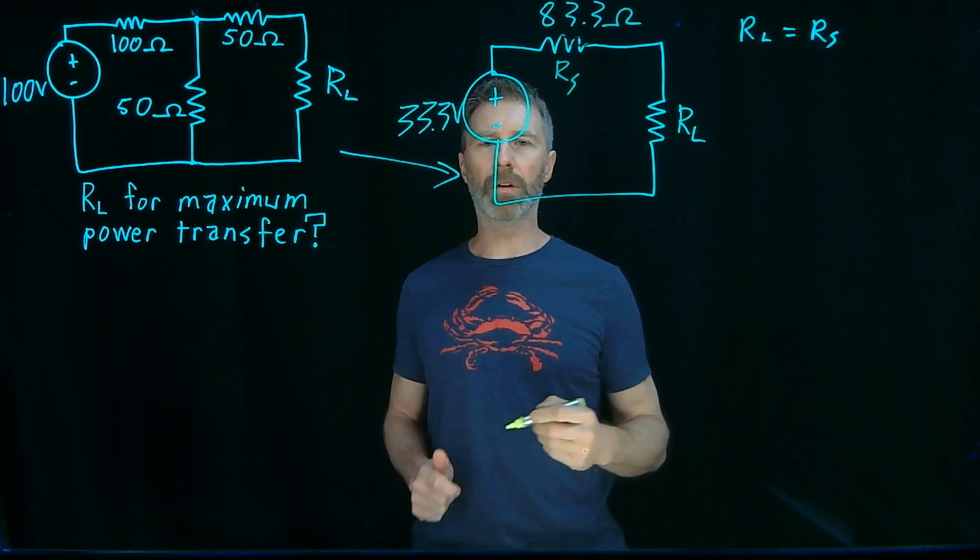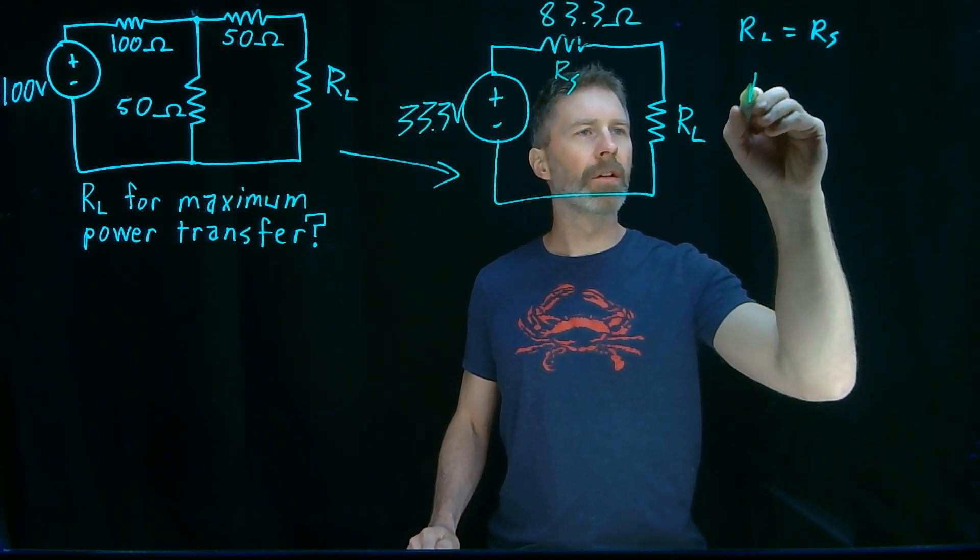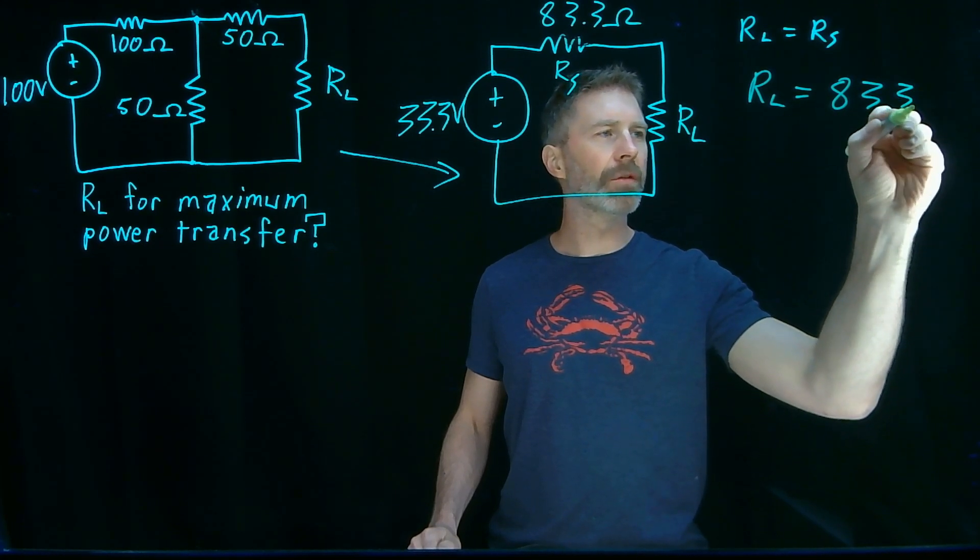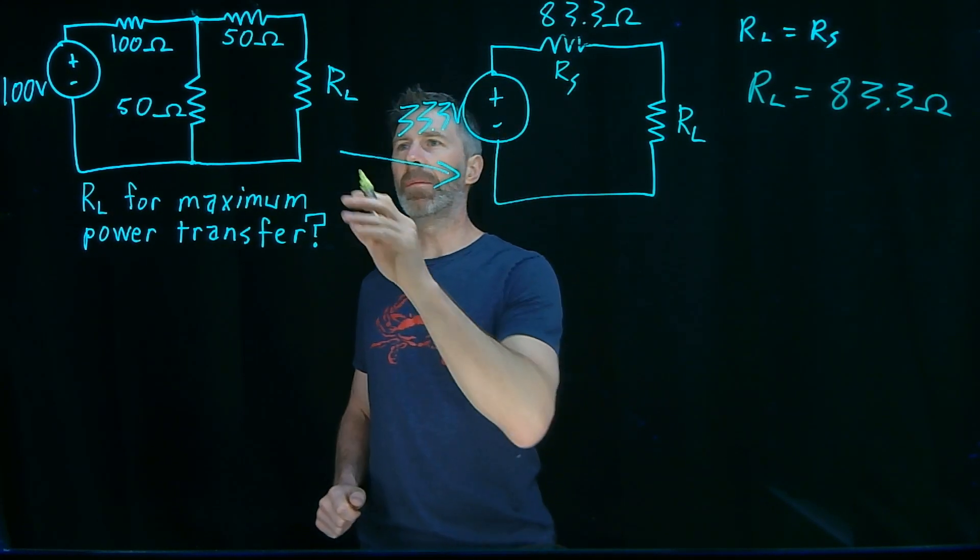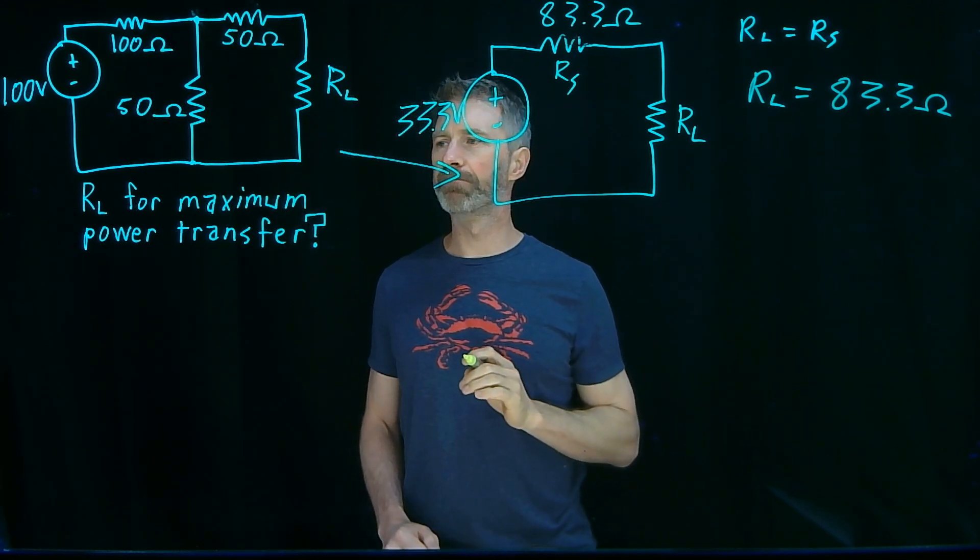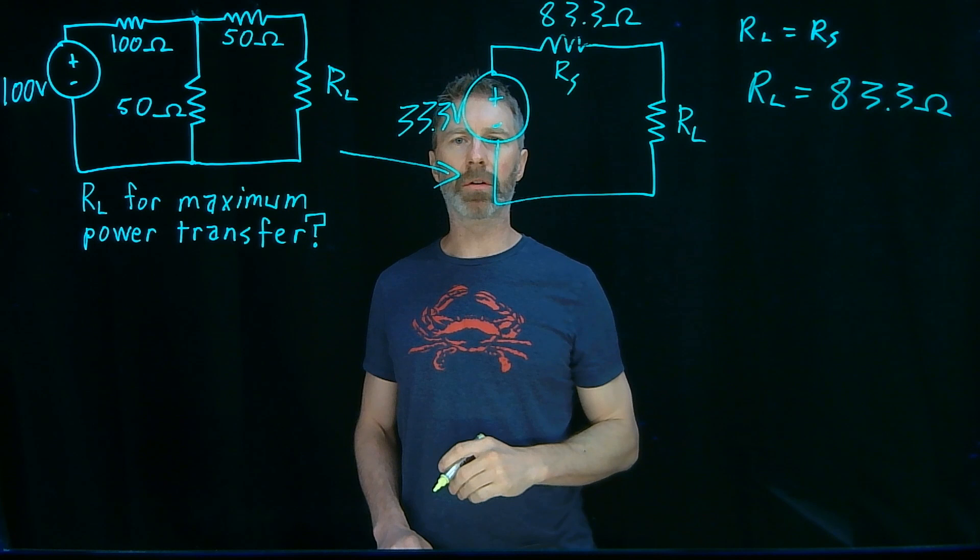And so we know from the maximum power transfer theorem that now if we have an RS that's equal to 83.3 ohms, then the maximum power will transfer from this part of the circuit to the load. And that's really it for the question.